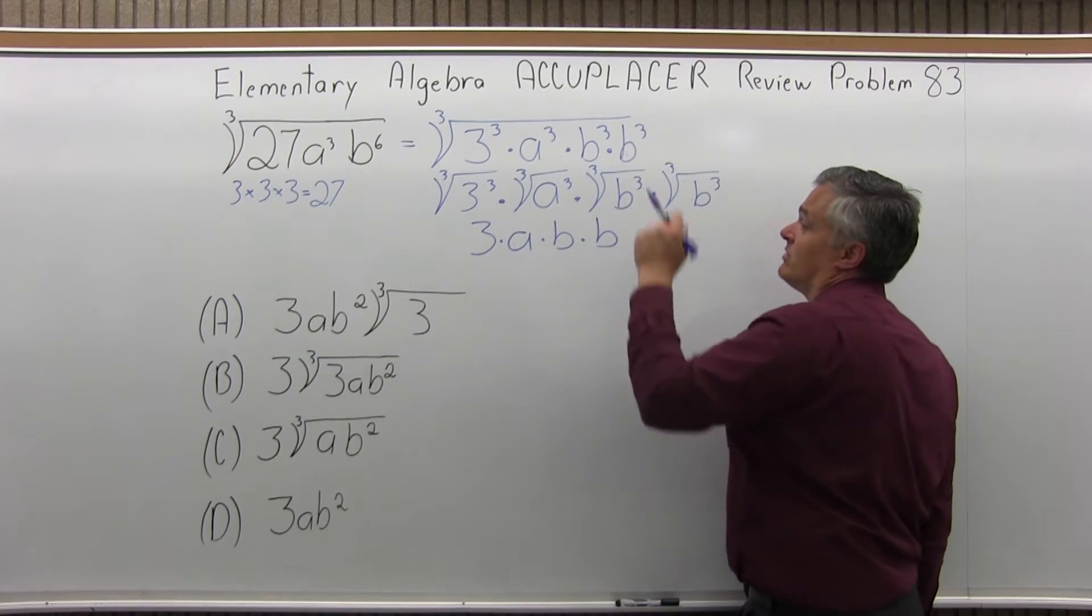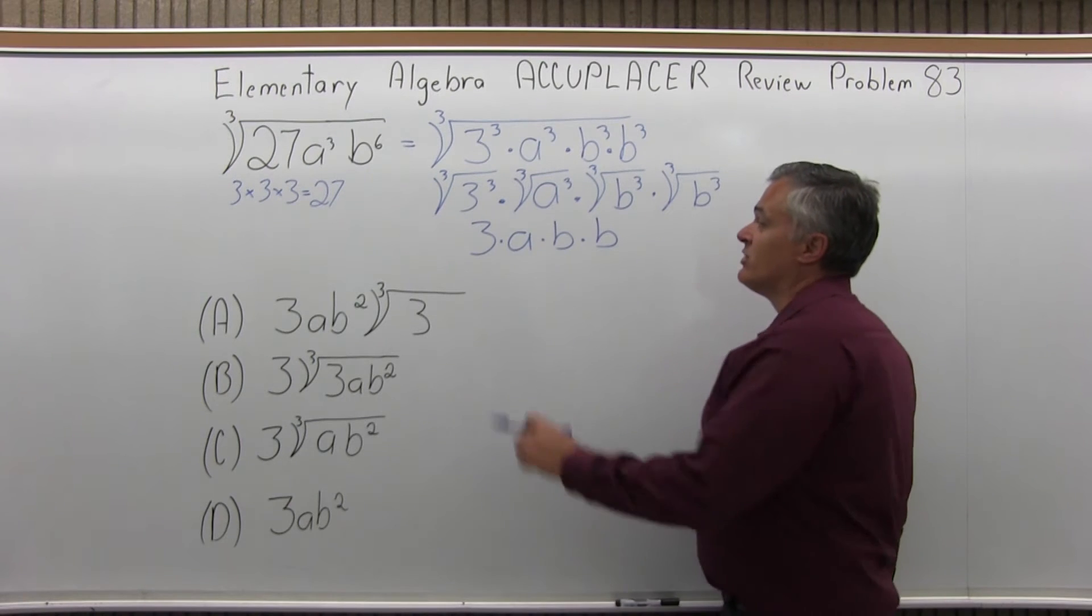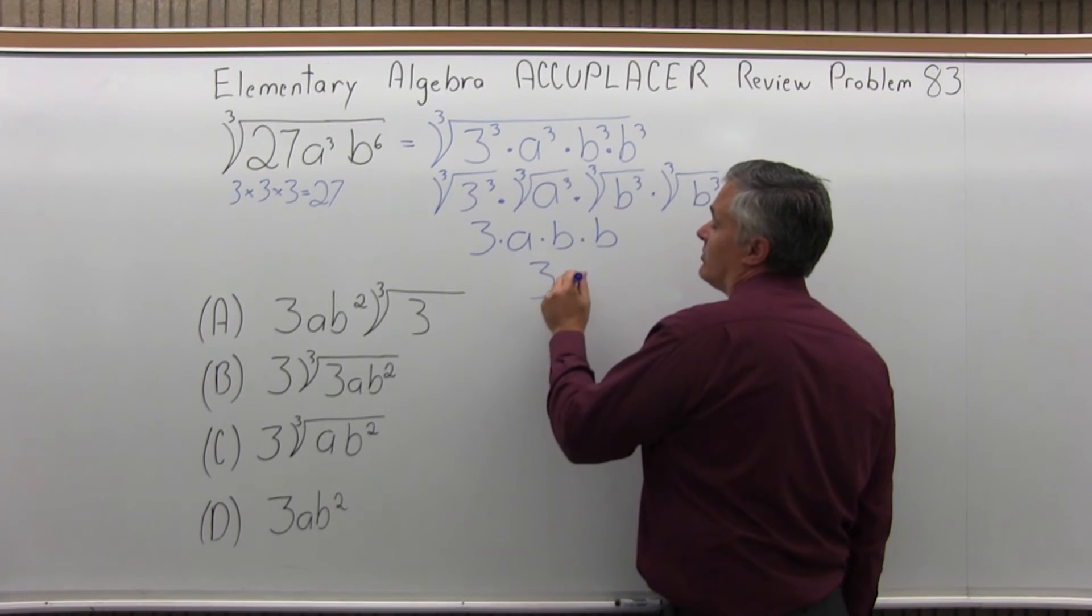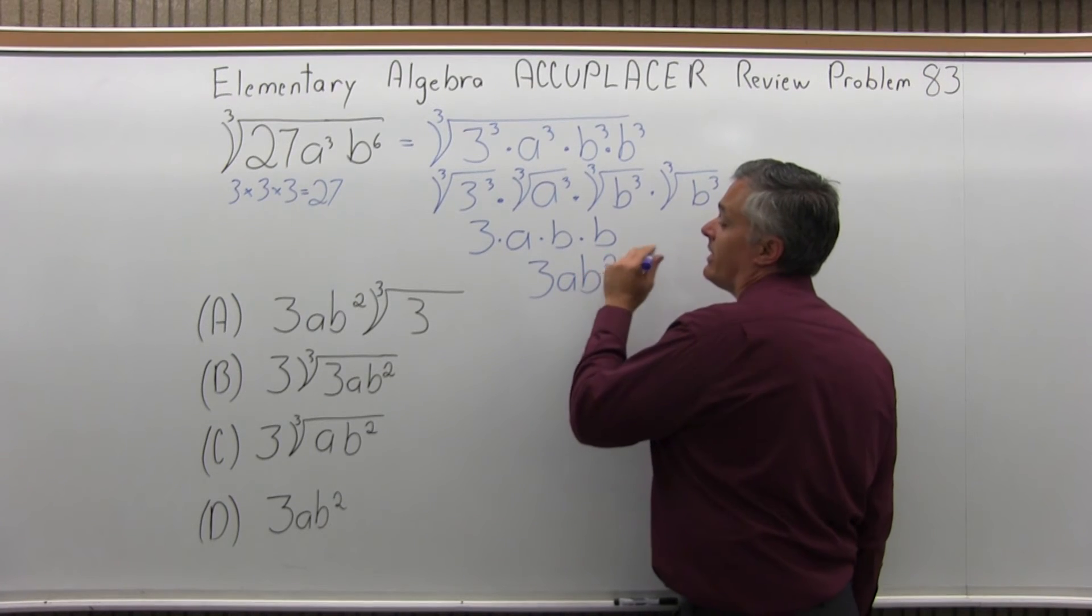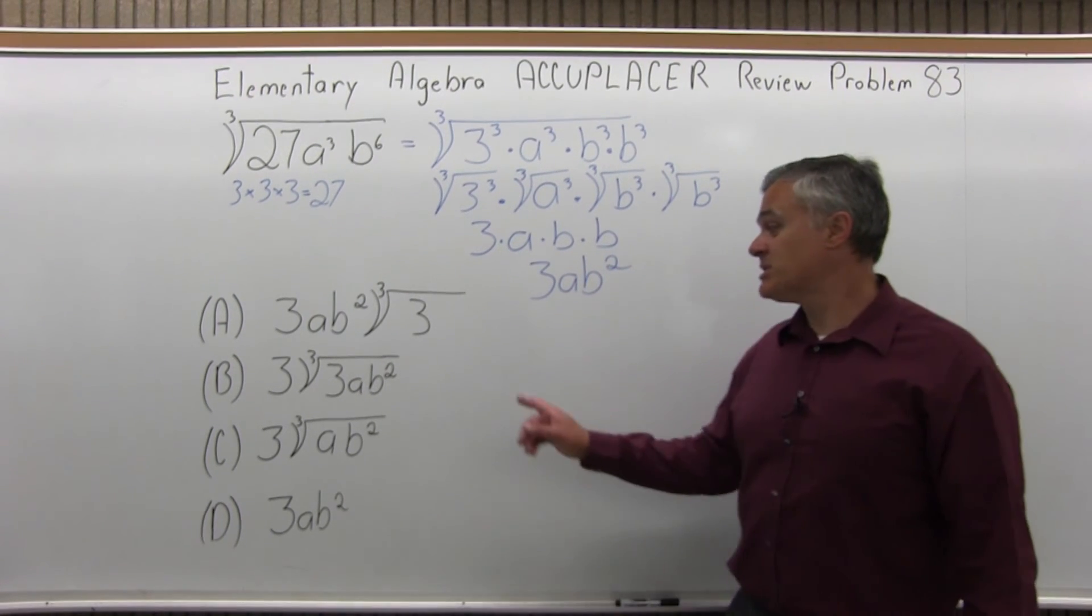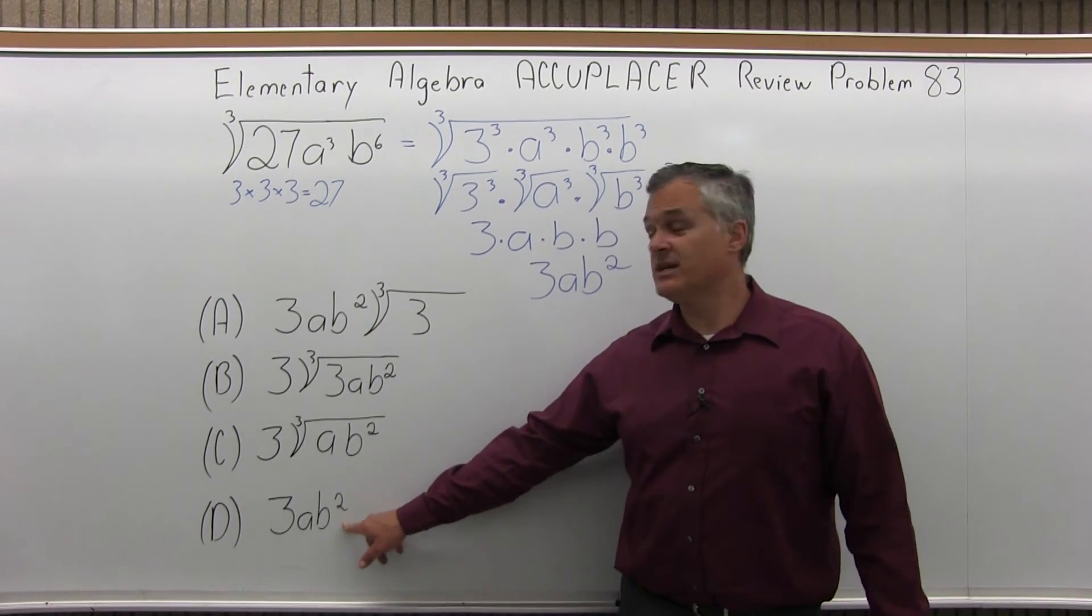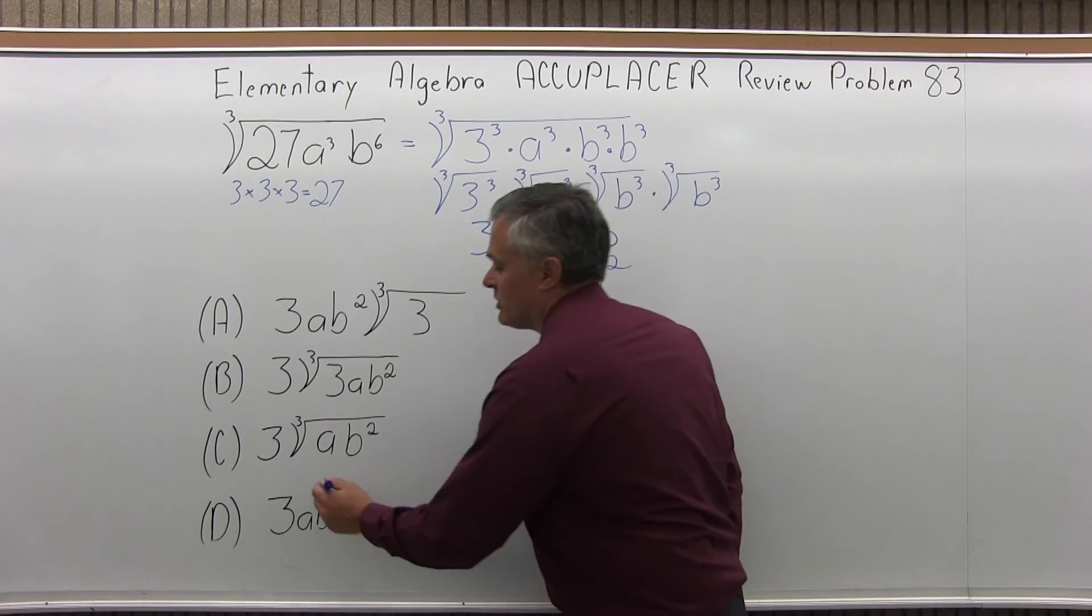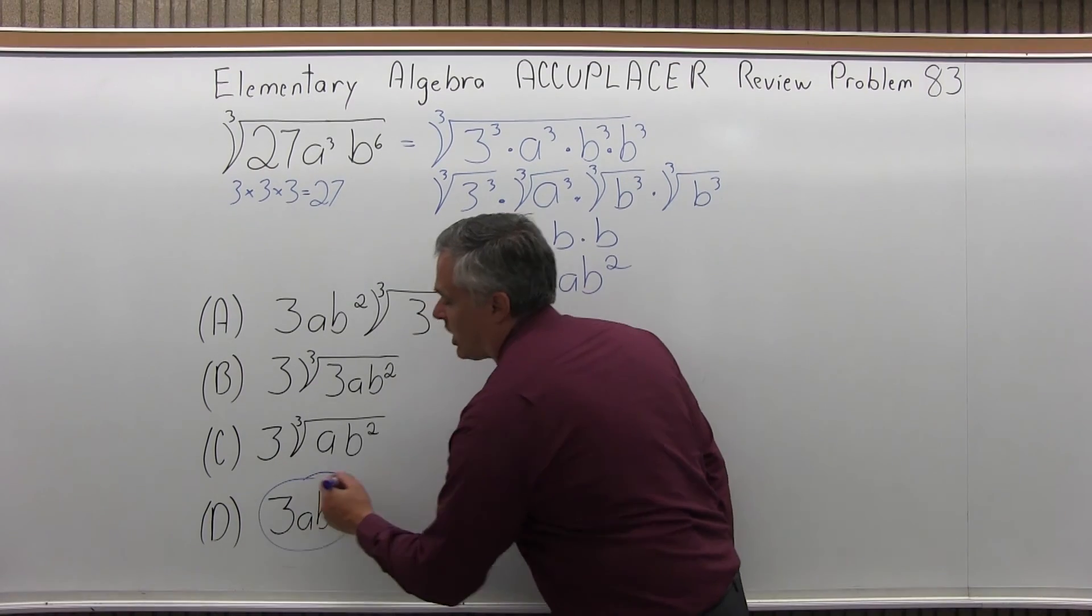The third power and the cube root undo each other. And now, 3 times a times b times b again, I can simplify to 3 times a times b². If I look at my options, option d does match my answer exactly, 3ab². So the answer to this problem is option d.